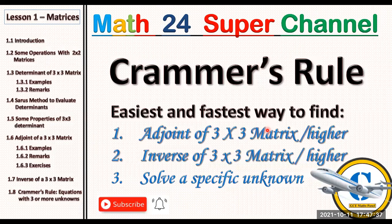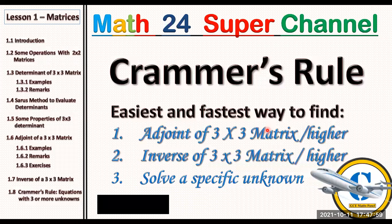Throughout the lesson we also focus on the adjoints of three by three matrices using Cramer's Rule, the inverse of a three by three and higher order matrices, and how to solve a specific set of equations with unknowns using Cramer's Rule. Note that Cramer's Rule is the easiest, fastest, and shortest method you can use in solving most of these equations. Stay tuned, watch this video to the end, and don't forget to subscribe.